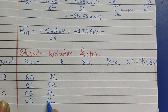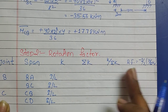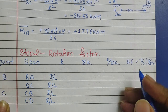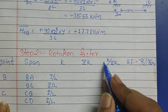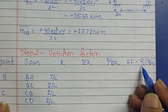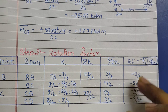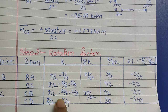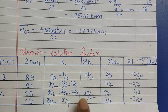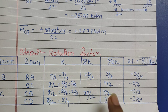After establishing the relative stiffness values, I calculate the summation of K, then K / ΣK, and finally the rotation factor by multiplying K/ΣK by minus 1/2. I have solved each step clearly so it should be easy to follow. Now we move towards step 3.